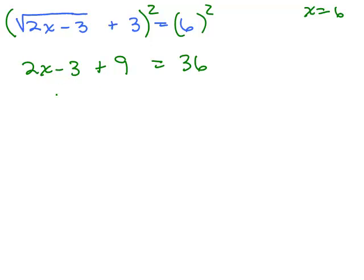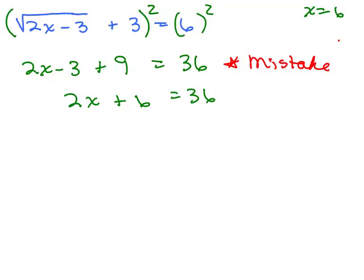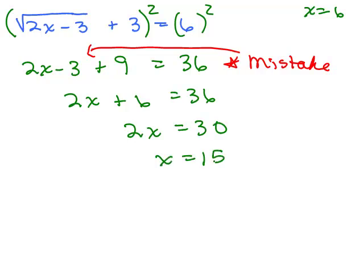Unfortunately, that's not correct. The left-hand side is wrong because squaring a binomial produces a middle term — it gets messy. If you made this mistake and kept going, you'd get 2x plus 6 equals 36. Subtracting 6 from both sides gives 2x equals 30, and x equals 15. But remember, we already know the correct answer is 6, so something went wrong.